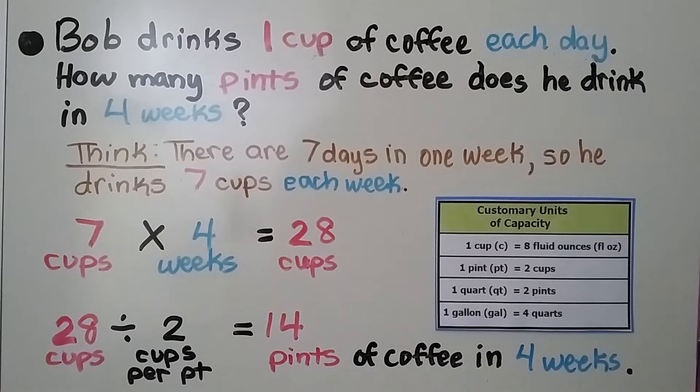We found how many cups he was drinking each week. We took that amount and multiplied it by four weeks and found that he drinks 28 cups in four weeks. Then we had to convert that to pints by dividing it by cups per pint.